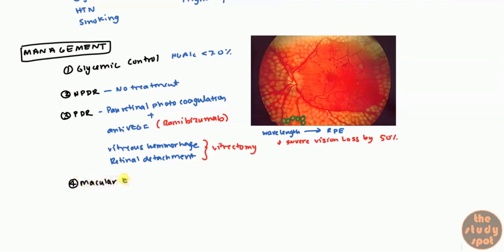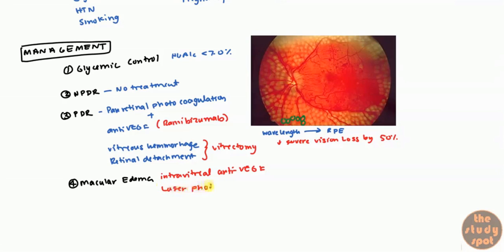What if the patient gets macular edema? Macular edema can happen in both proliferative and non-proliferative stages. If they get macular edema with non-proliferative diabetic retinopathy, you go ahead and treat it. The treatment is intravitreal anti-VEGF, where they actually inject it into the eye, and laser photocoagulation. This is an overview of diabetic retinopathy.